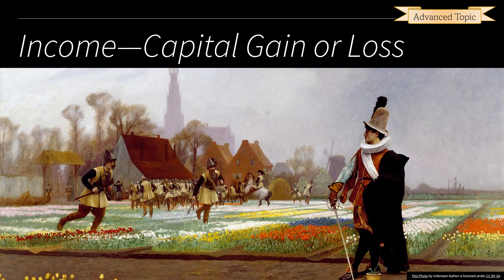Welcome back, Advanced VITA Volunteers. In this lesson we're going to be talking about capital gains and loss kinds of income. We had a brief introduction to some of these ideas in our last lesson where we were talking about the exclusion of cancelled debt on a principal residence. Remember, in the case of a foreclosure or abandonment, those transactions are treated like the sale of the home. Here again, we're working with an asset owned by the taxpayer that was sold during the year, and we need to figure out whether they sold it for a gain or a loss.